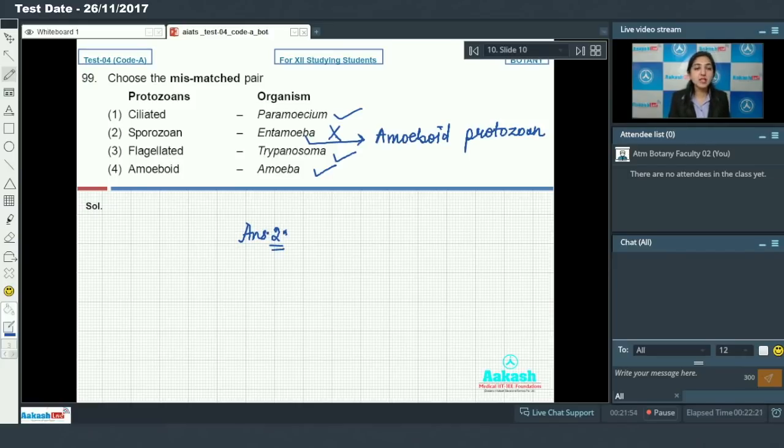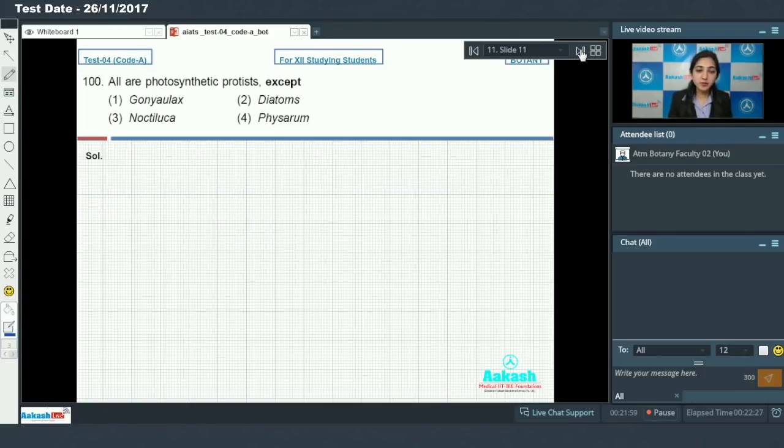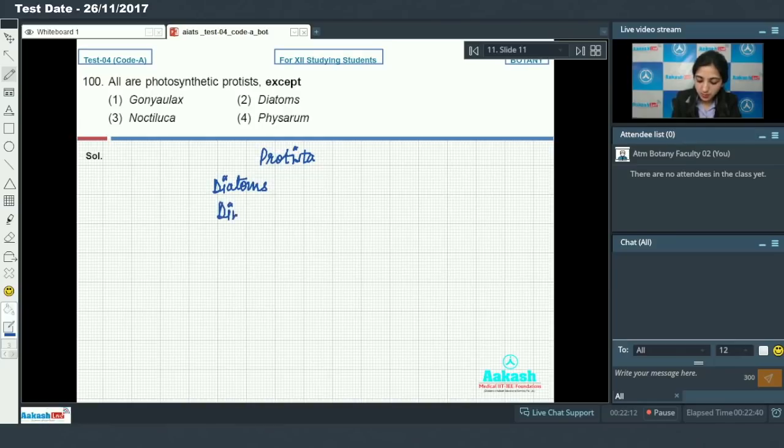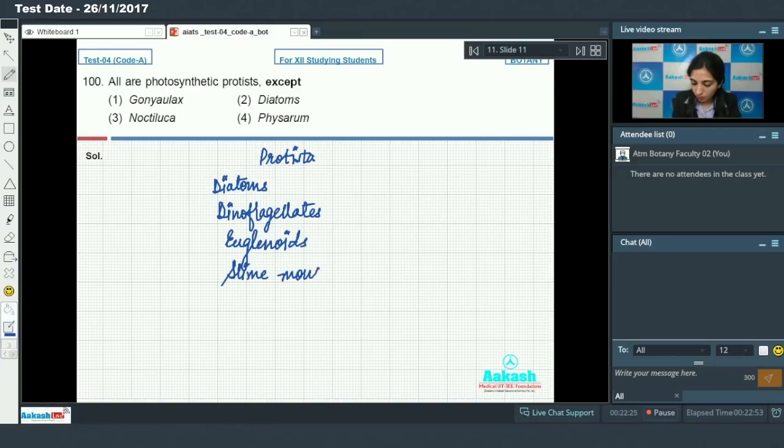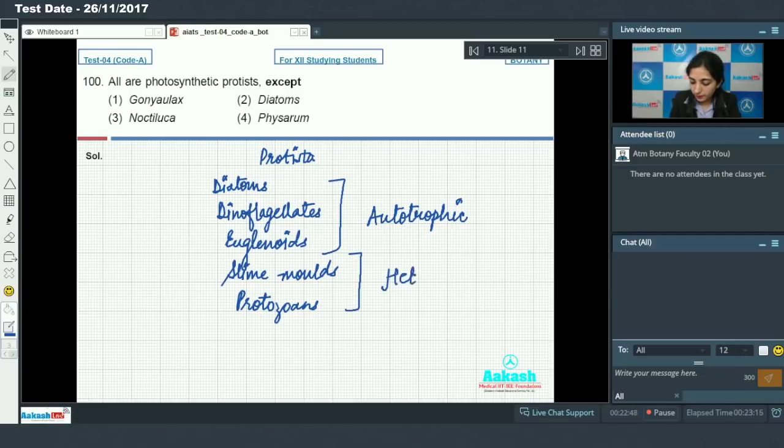Moving on to the next question, that is question number 100. All are photosynthetic protista except. We know in kingdom protista we have diatoms, dinoflagellates, euglenoids, slime molds and protozoans. These three are autotrophic and these are heterotrophic. Now you have to identify which one of these four is not photosynthetic, that means which one of these four is a heterotroph.